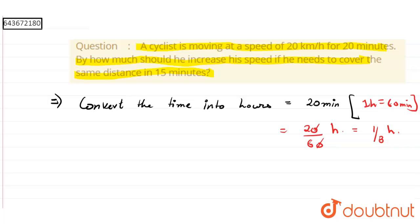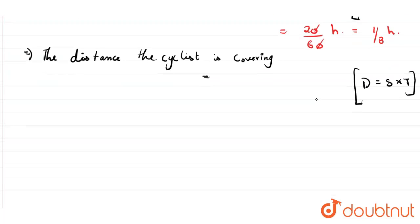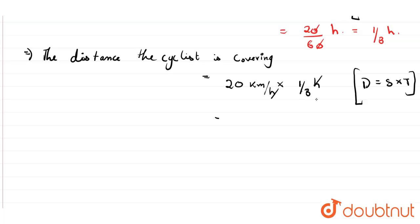we can calculate the distance the cyclist is covering. We know the formula of distance: distance equals speed times time. So speed is 20 kilometers per hour times time which is 1/3 hour. The hours cancel each other.